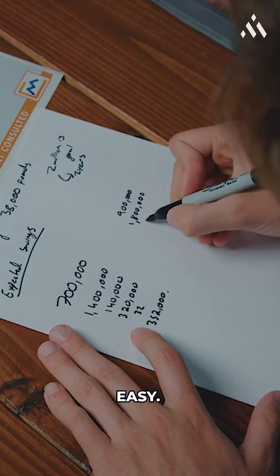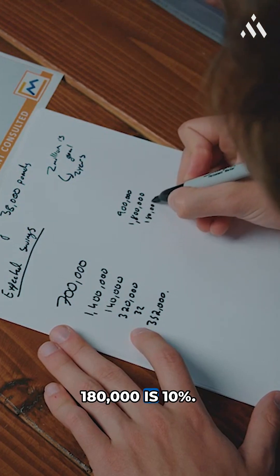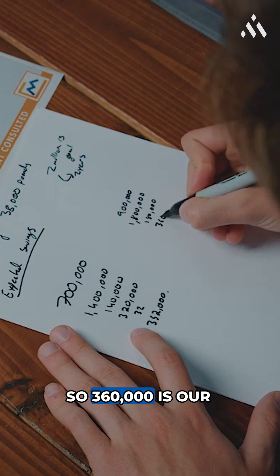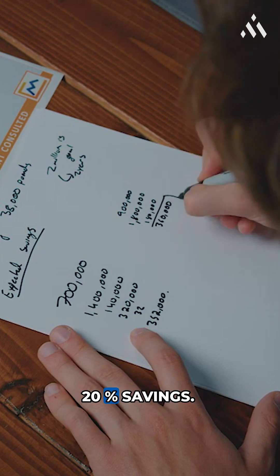So that's pretty easy: 180,000 is 10%, so 360,000 is our 20% savings.